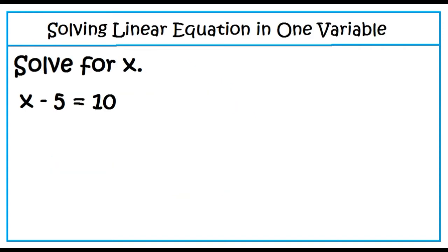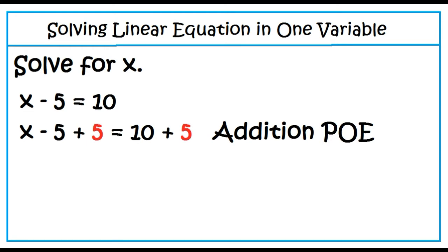Solving linear equations in one variable. Given x minus 5 equals 10, solve for x. Our goal is to isolate x by eliminating the other term. To eliminate negative 5, add its opposite, which is 5. Remember that when you add 5 to the left side of the equation, add 5 also to the right side. That is the addition property of equality. A number plus its opposite is 0, so x plus 0 is x. 10 plus 5 equals 15, so x equals 15.